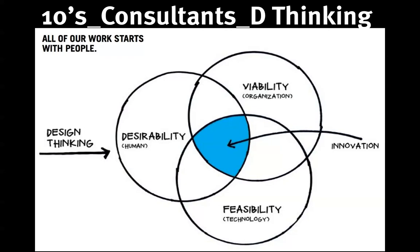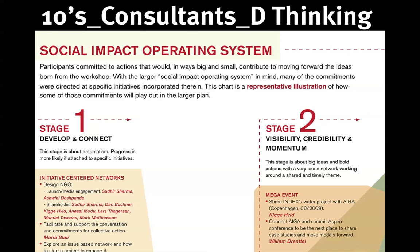By the second decade of the 21st century, design and the value it creates had stopped being visual artifacts and become — through consultancies like IDEO — processes, methodologies, and systems for innovation, like this reorganization plan to promote innovation for the third largest American nonprofit organization, the Rockefeller Foundation in New York.